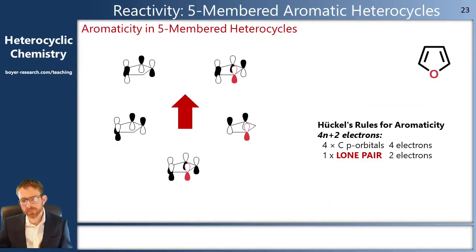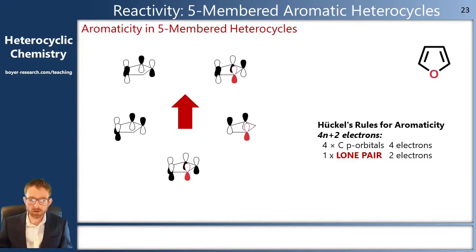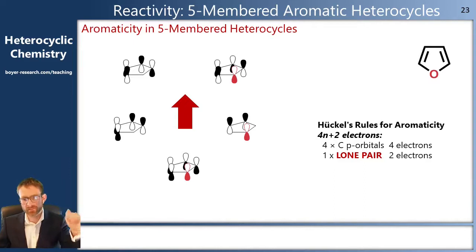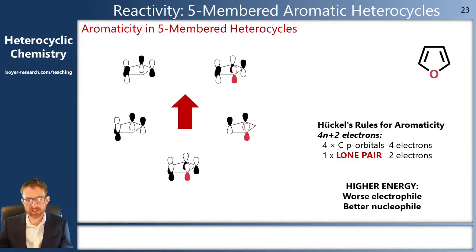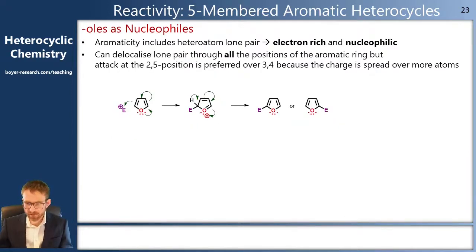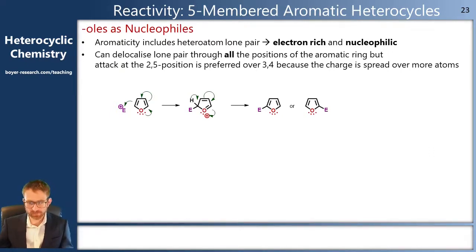The first thing to remember is that to build this aromatic system we need six electrons, and we get those six electrons from two carbon-carbon bonds and then one lone pair. Because we use the lone pair in the construction of the aromatic system, the entire energy of the system is raised. This means we have a more nucleophilic and less electrophilic system, so if we treat something like a furan with an electrophile we can push those lone pairs around the ring, get attack of our electrophile, and lose our hydrogen to regain aromaticity in electrophilic aromatic substitution, which is now fast.